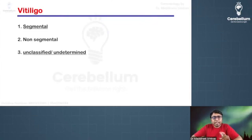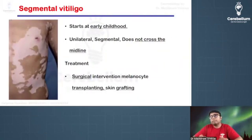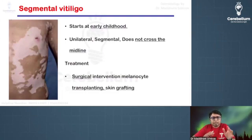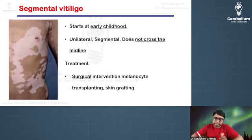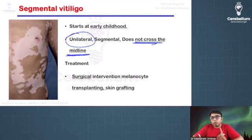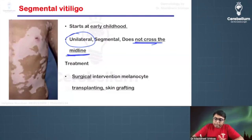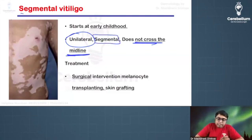The classification — important to remember — is: segmental vitiligo, non-segmental vitiligo, and unclassified variant. Segmental vitiligo was asked in previous years. The terms segmental and dermatomal are used whenever lesions are unilateral and not crossing the midline. So whenever a condition affects only one side of the body, arranged in a segment or dermatome, we use the term segmental.